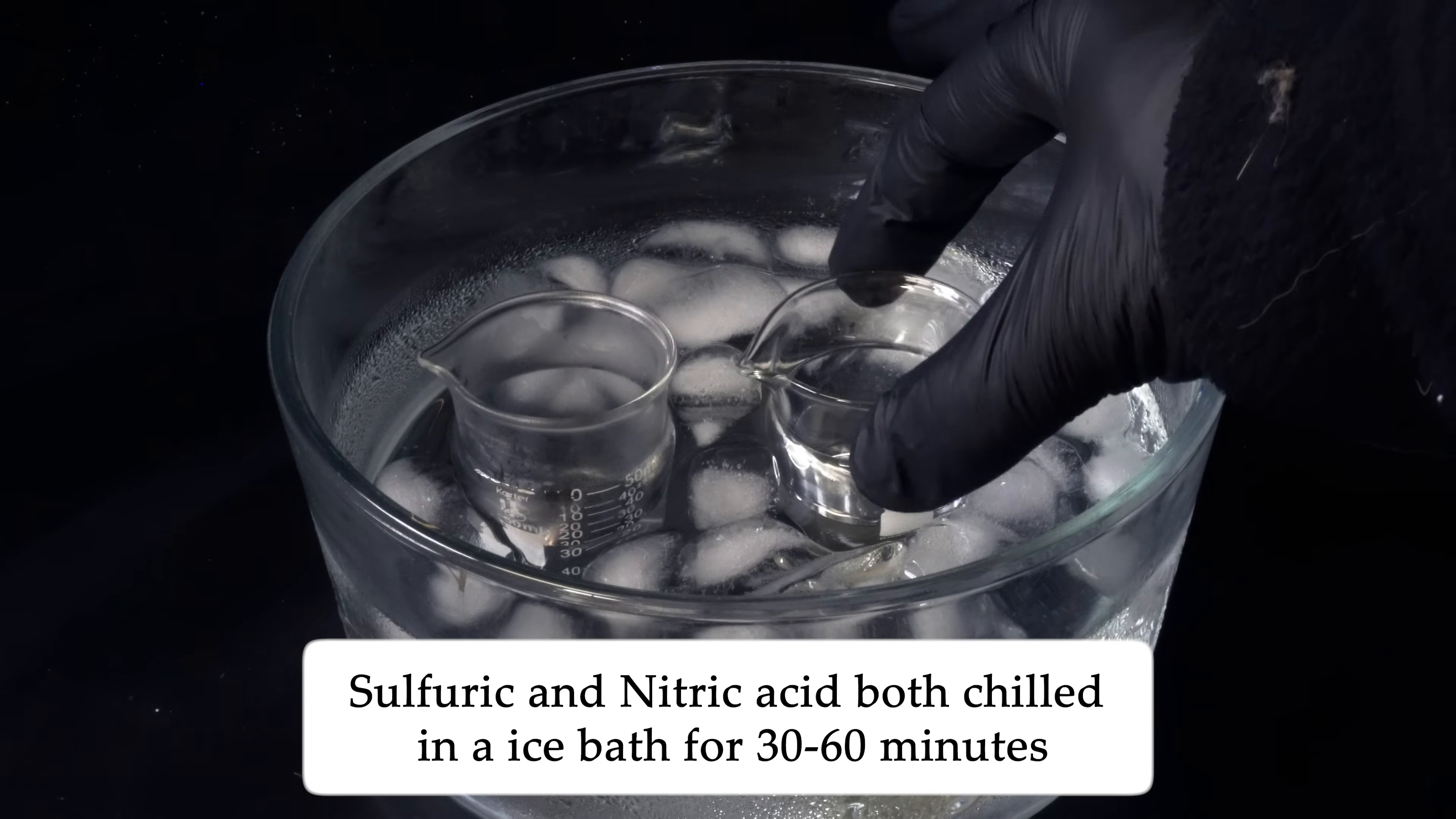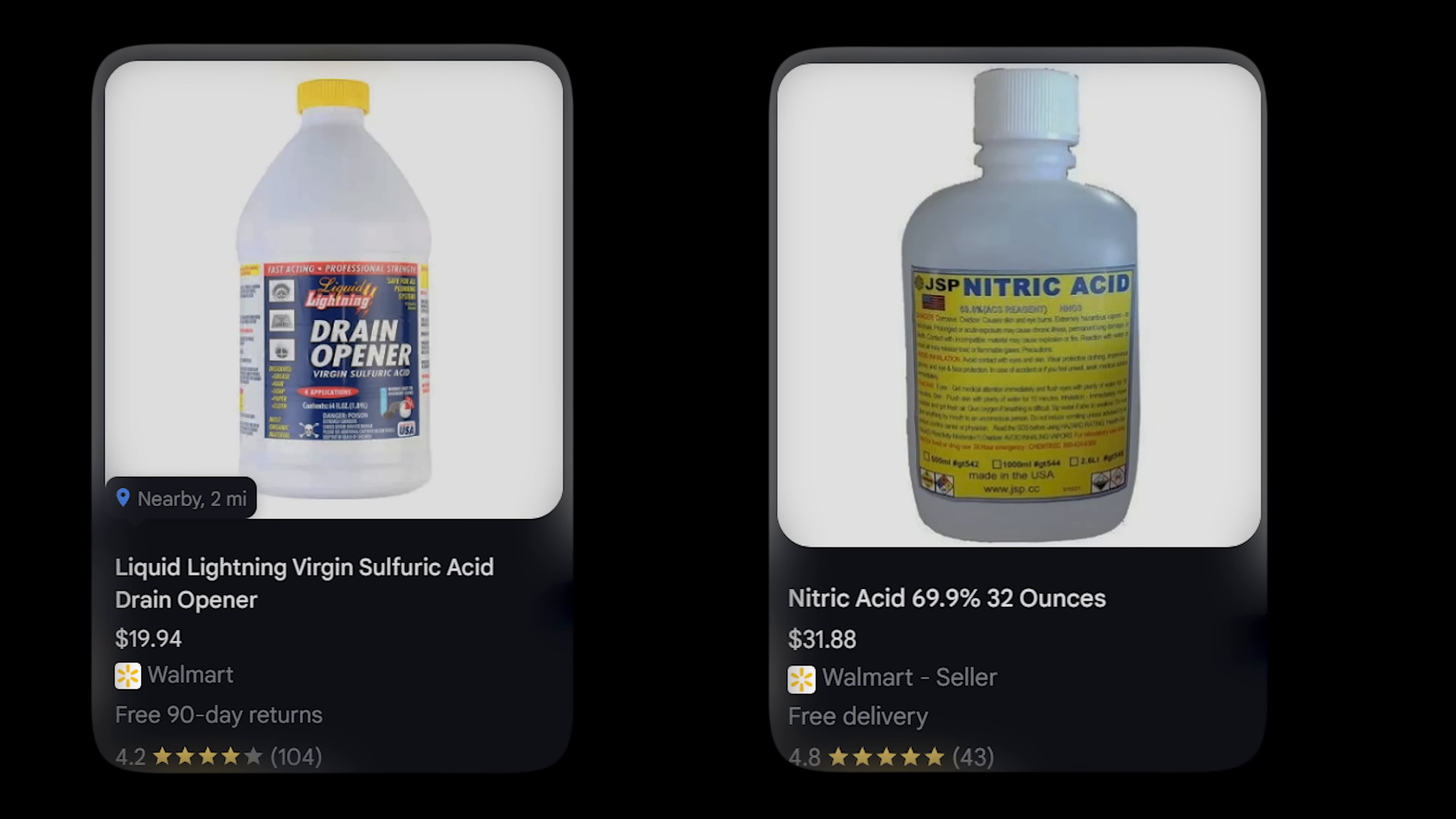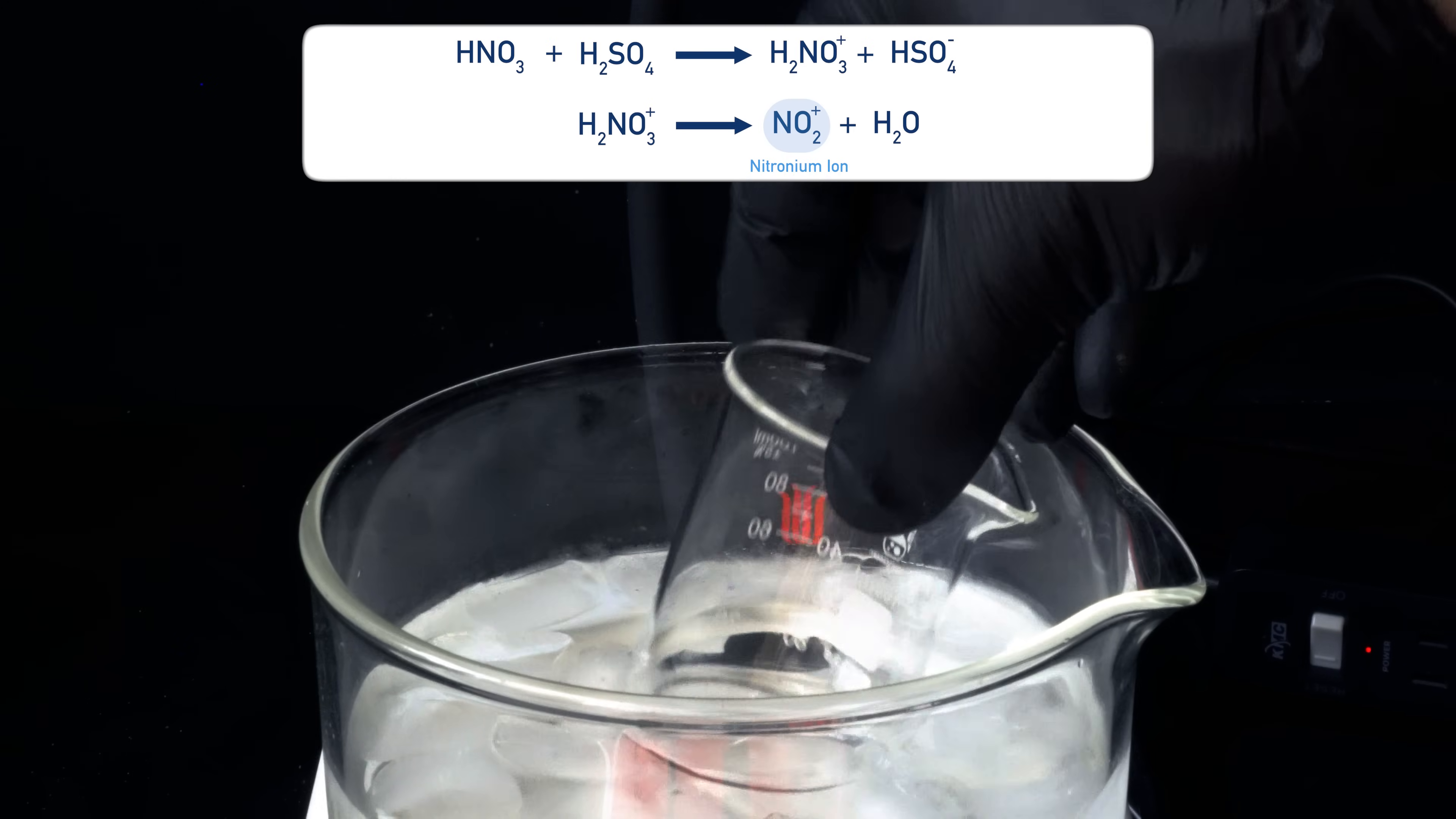First, we'll need pre-chilled sulfuric acid, 98%, sorry Europeans, and you'll need 68% nitric acid. Both of which are incredibly hard to get. We need to make a nitrating mix, and this is where the sulfuric and nitric acid come in. When we mix the two together, we'll get a nitrating mixture.